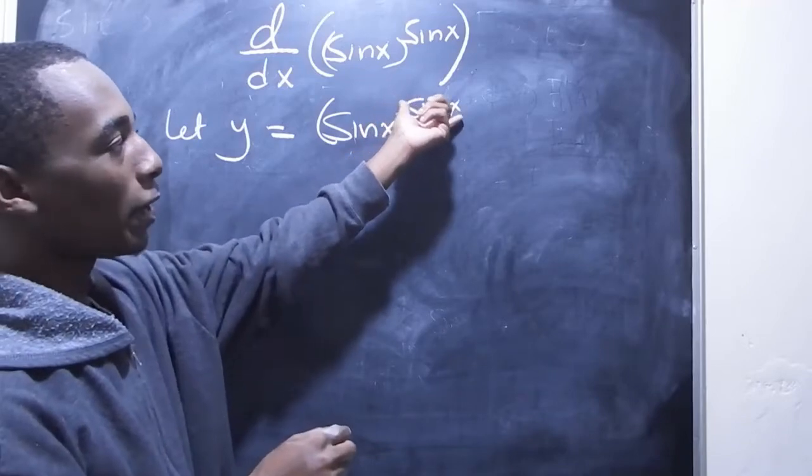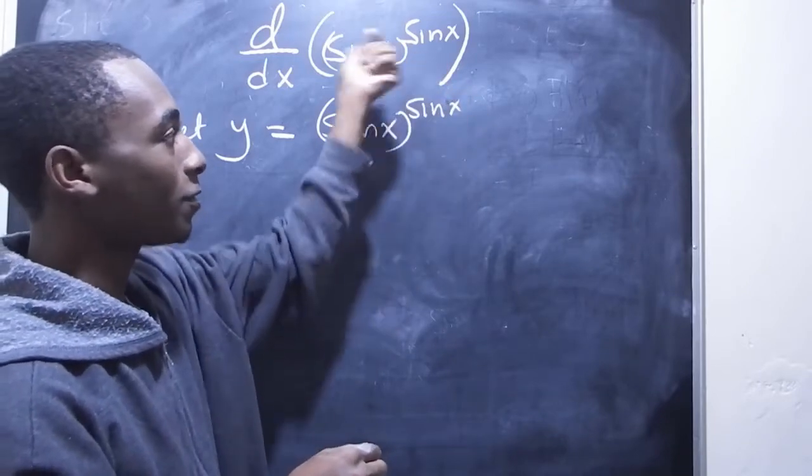Then, because this power here is a function of x, we can't do so much, so I have to bring it down.